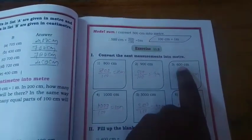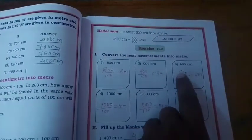The next question: 900 cm is equal to 9 m. The third one is 600 cm. 600 divided by 100 equals 6 m.